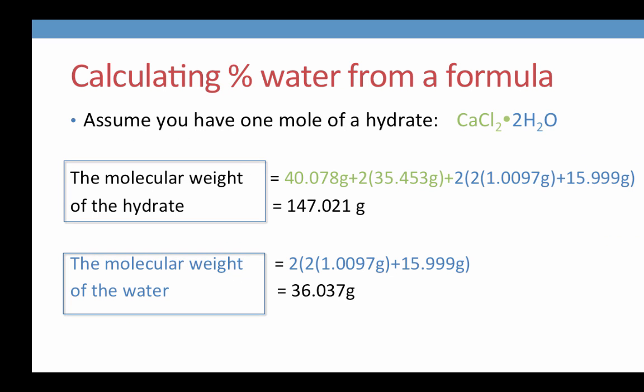Percent water is a mass ratio, and it is calculated by dividing the mass of the water by the mass of the hydrate. In order to determine the percent water from a molecular formula, we can begin by assuming we have one mole of our hydrate of interest.